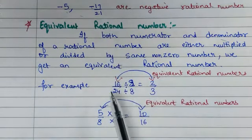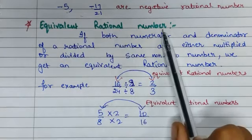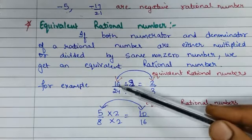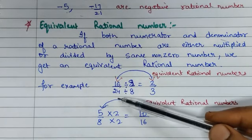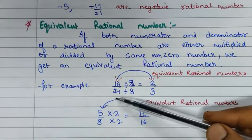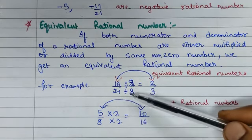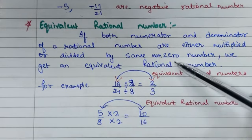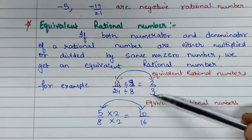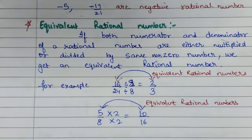Now let us move further. Equivalent rational number: if both the numerator and the denominator of a rational number are either multiplied or divided by the same non-zero number, we get an equivalent rational number.